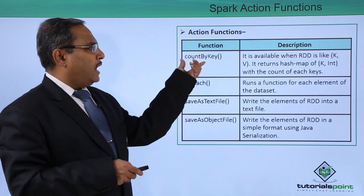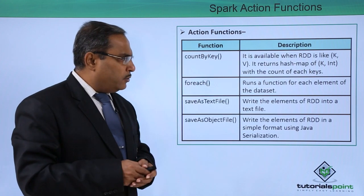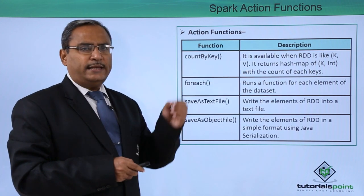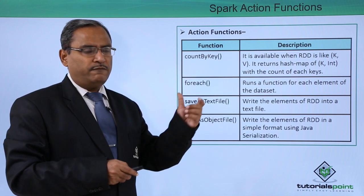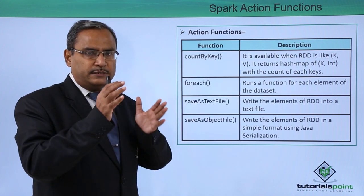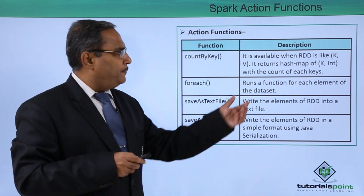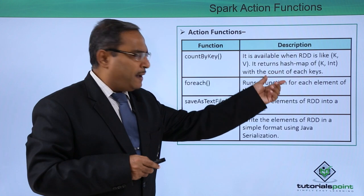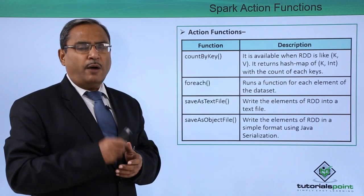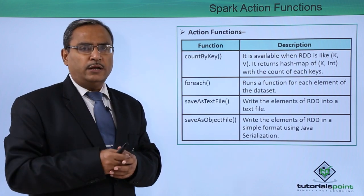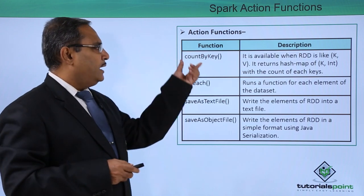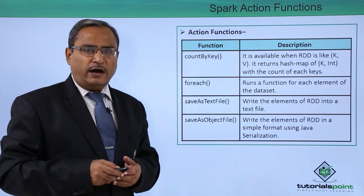Next is the countByKey function. It is available when the RDD is in the form of key-value pairs (k, v), where k stands for key and v stands for value. It returns a hash map of (k, int) with the count of each key — how many times each key has been counted — so (k, int) will be the outcome.